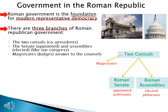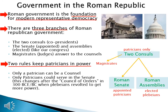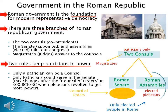Finally, there are magistrates — those are judges — and they answer directly to the council. There are two rules that keep patricians in power: only a patrician can be a council and hold the highest office in Rome, and only patricians could serve in the senate. This will change after the Conflict of Orders in 300 BCE, when the plebeians revolt and get more power by being allowed to join the senate. The only elected people in Rome are the Roman assemblies.